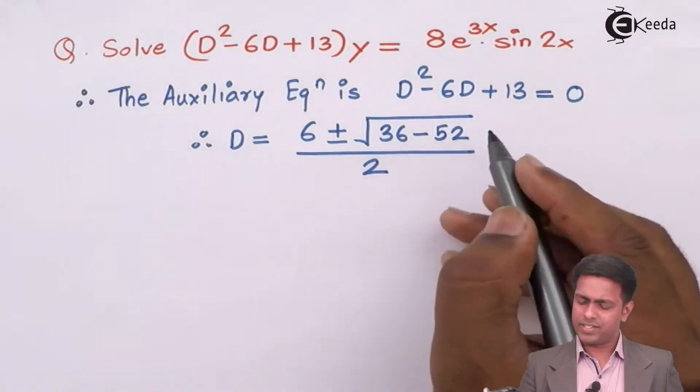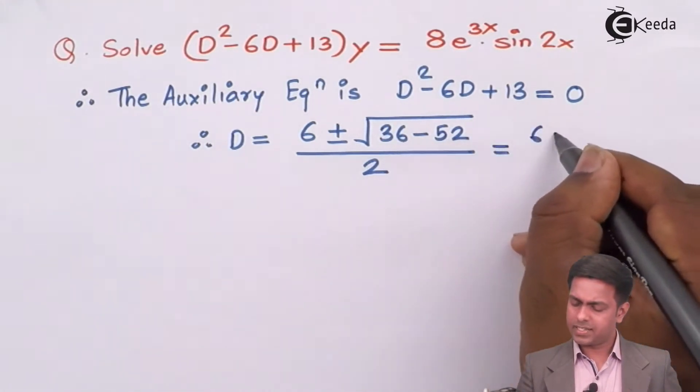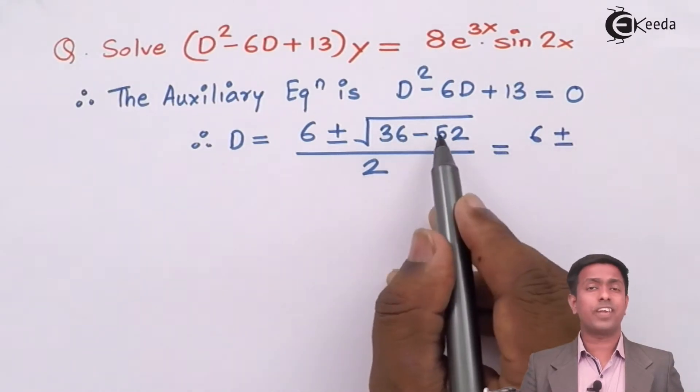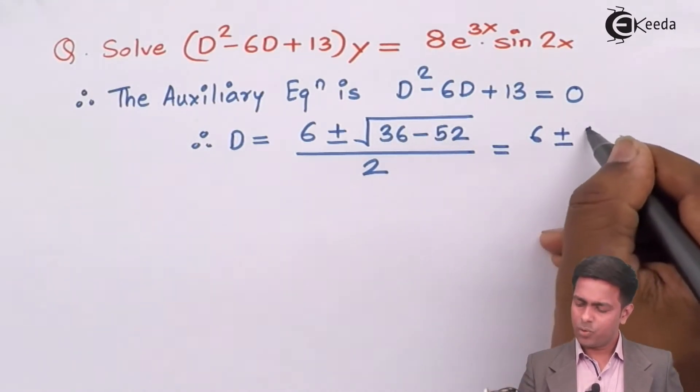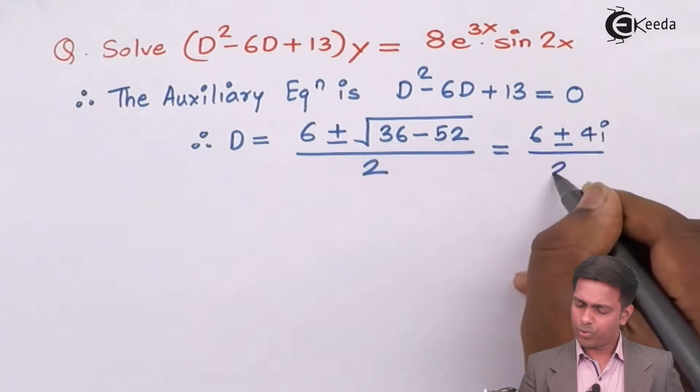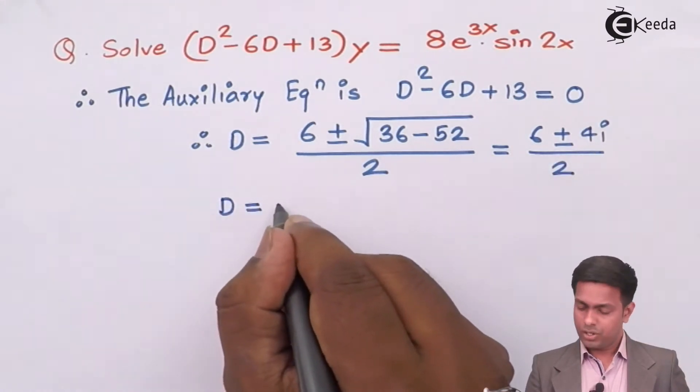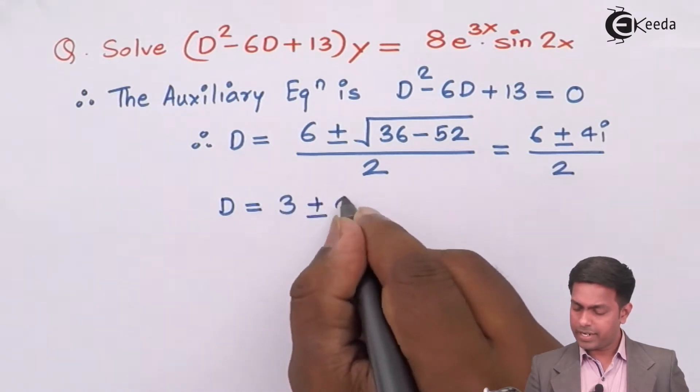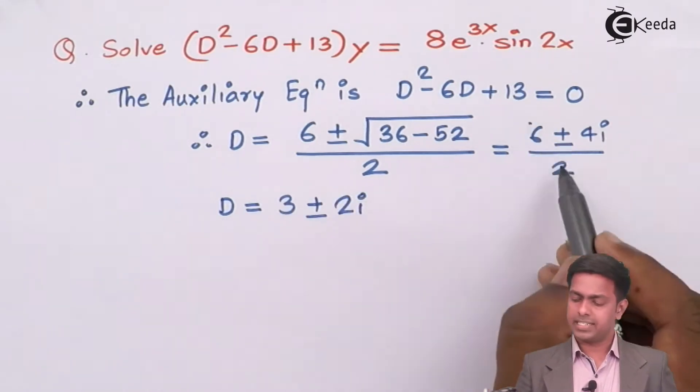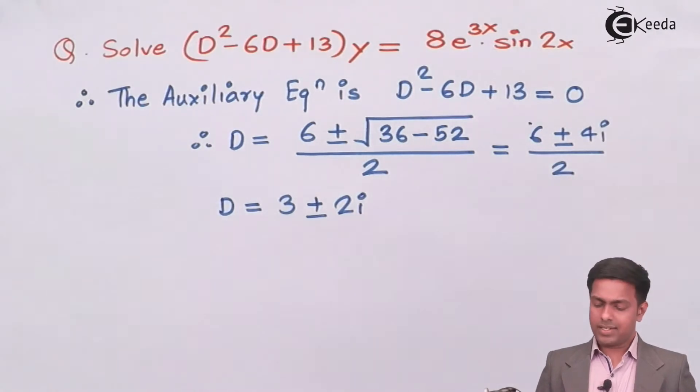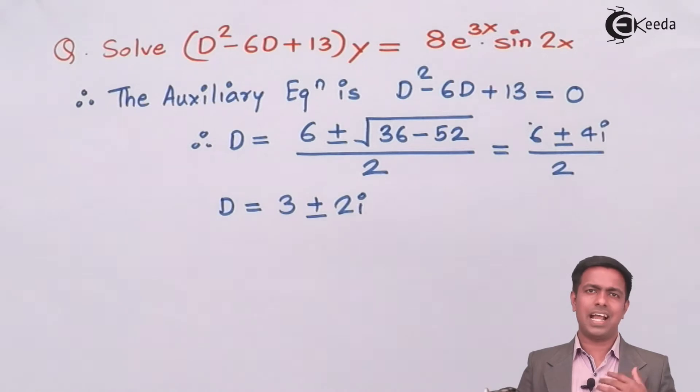Now this is negative 16 so we will get 6 plus or minus the root of negative 16 is 4i upon 2. We can say that the value of D is 3 plus or minus 2i. Here we got two roots and these are complex and distinct.